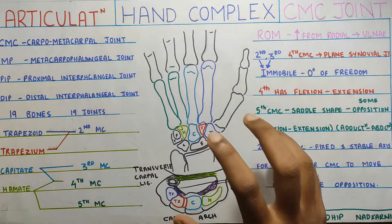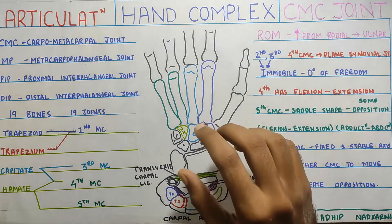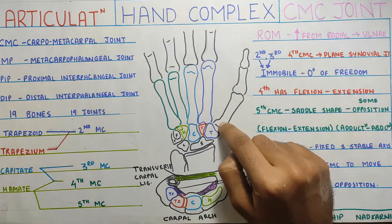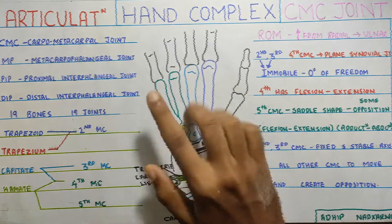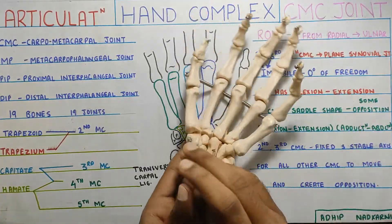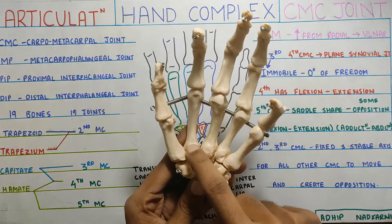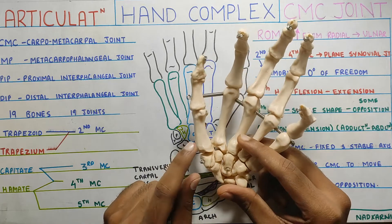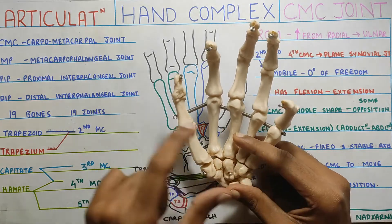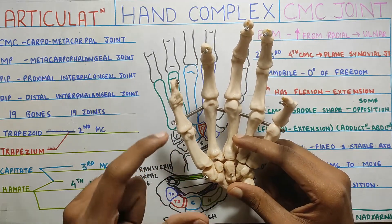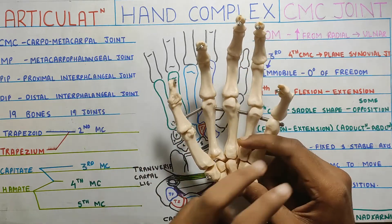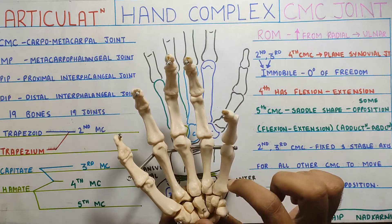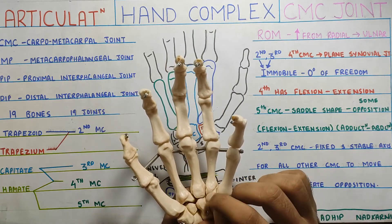We are going to focus in this video on the carpo-metacarpal joints, and we have 5 carpo-metacarpal joints — that is the thumb and the other 4 fingers. We are not going to discuss the thumb because its structure and function are very different compared to the other fingers. So thumb we will discuss separately. We will be talking about the 2nd, 3rd, 4th, and 5th carpo-metacarpal joints.